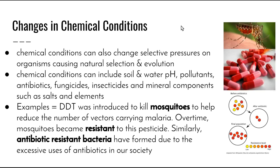Looking at the second dot point — changes in chemical conditions — chemical conditions can include soil and water pH, pollutants, antibiotics, fungicides, insecticides, and the mineral components found in soil or water, such as salts and other elements. One way of controlling the disease malaria was to kill the adult mosquitoes, which are the vectors of the disease — meaning they carry the disease from person to person — by spraying pesticides such as DDT or dieldrin. However, numerous populations of mosquitoes have become resistant to DDT through natural selection over time, and therefore the chemical is no longer effective in killing these insects.